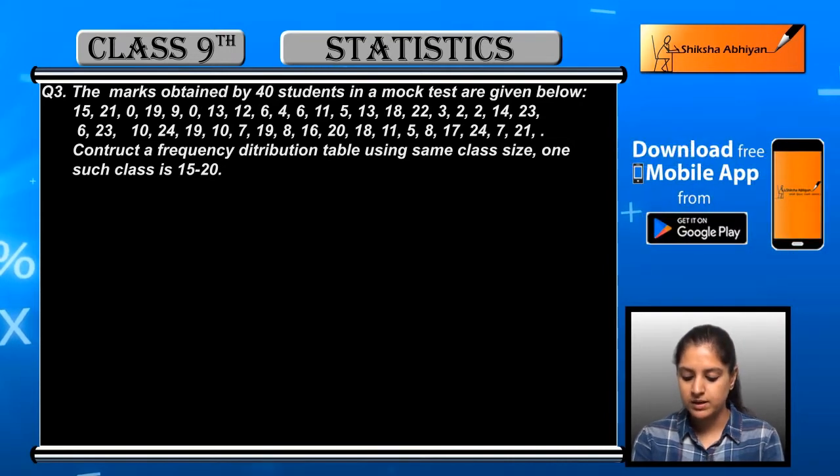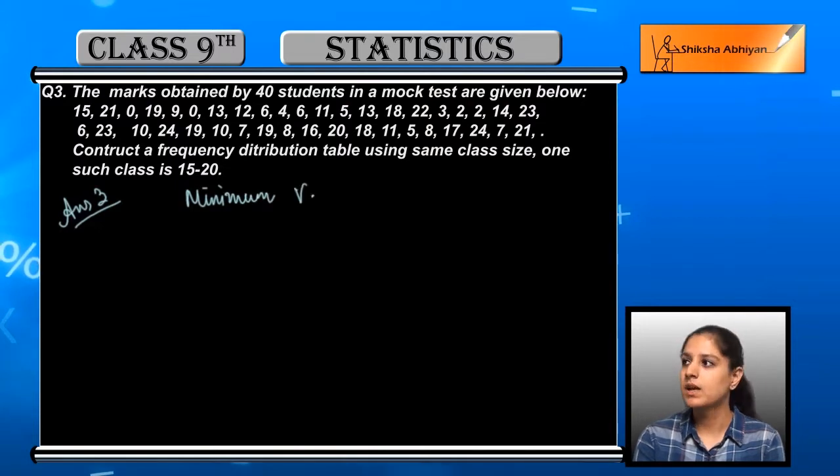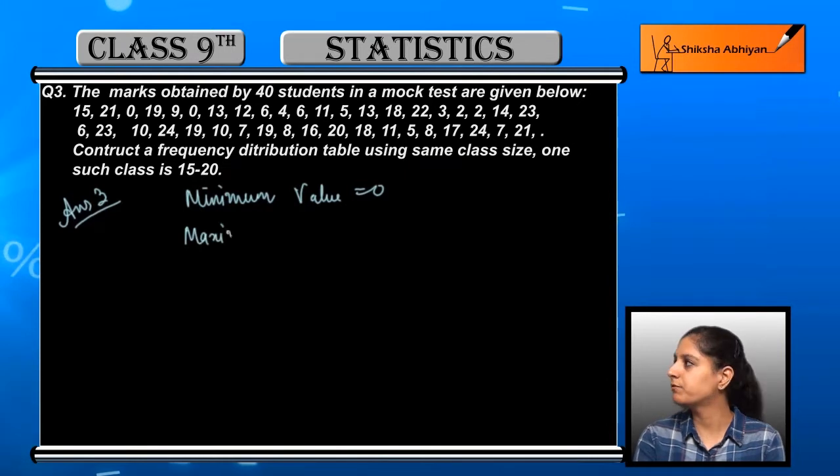We have to make a table like this. Let us see how. I hope you all remember the first step which is the minimum and the maximum value identification. In this case the minimum value is 0 and the maximum value is 24.